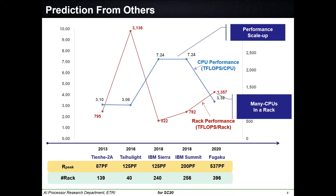The scale-up of single chip performance enables lower power chips and lower power systems. We can also integrate more chips in a rack, increasing the overall system performance, and reduce the power consumed for cooling the system. Integration of CPUs and accelerators in a single chip provides much more data bandwidth, which can effectively remove the data bandwidth bottleneck. The rack-level performance constantly increases, showing that CPU performance scale-up is essential for higher system performance.